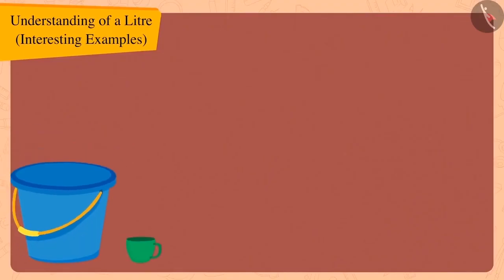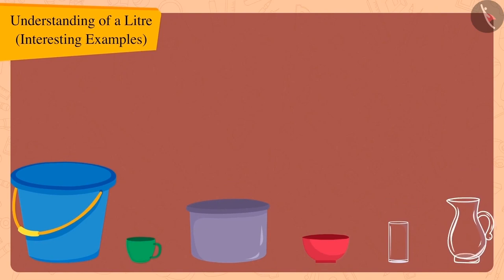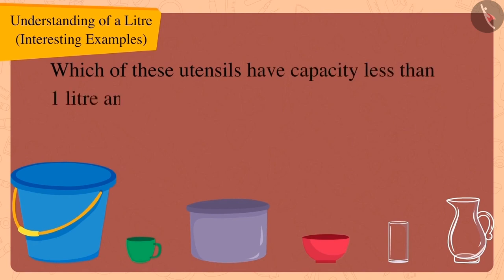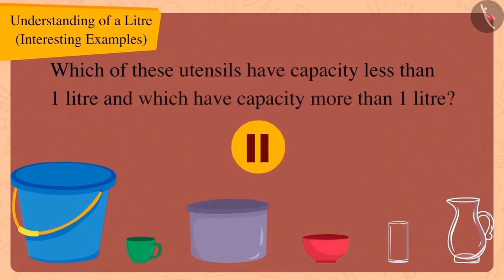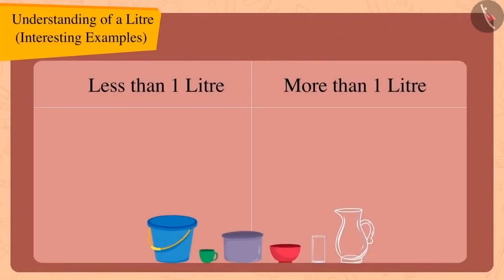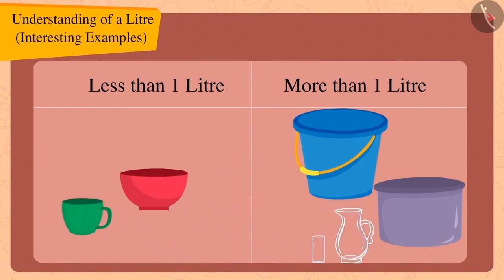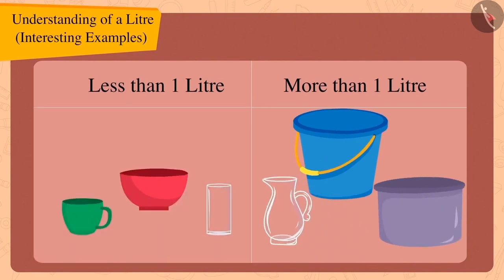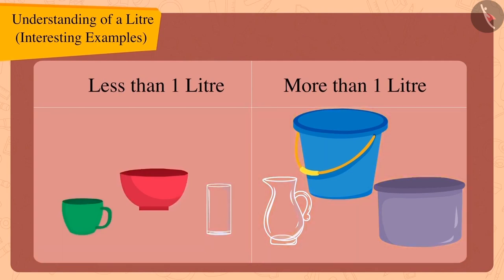Children, here are some utensils Bholla collected. Can you guess which of these utensils have a capacity less than one litre and which have a capacity more than one litre? If you want, you can stop the video and try to find the answer. Well done, children — you have found the right answer! The capacity of these utensils is less than one litre and the capacity of these utensils is more than one litre.